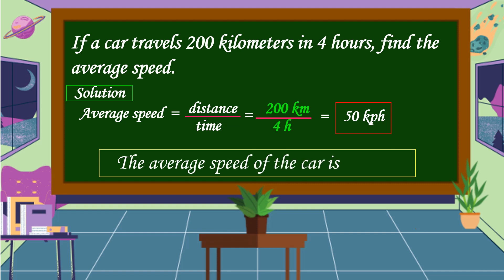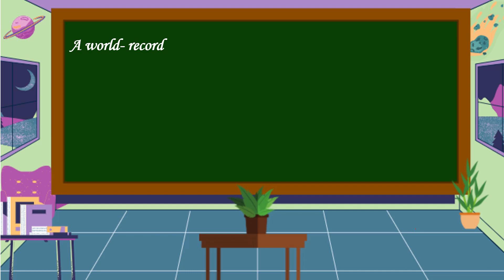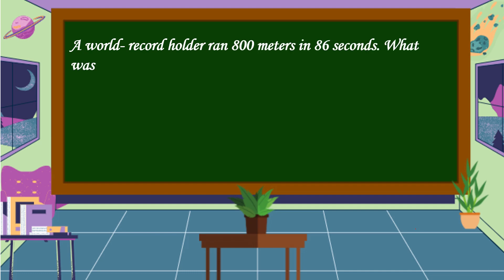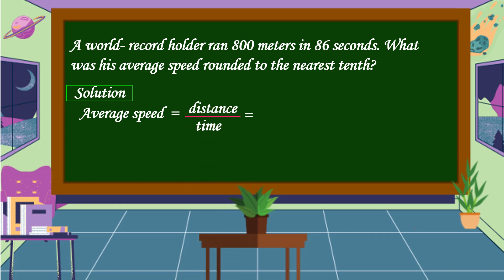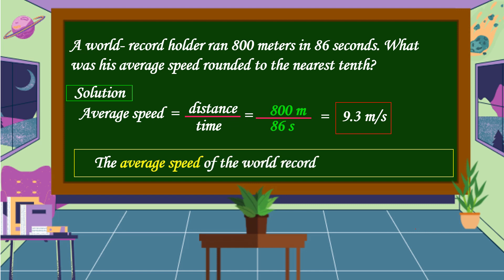Therefore, the average speed of the car is 50 kilometers per hour. Next problem: a world record holder ran 800 meters in 86 seconds. We're going to find the average speed using distance divided by time. The distance is 800 meters and the time is 86 seconds. So, 800 meters divided by 86 seconds equals 9.3 meters per second. Therefore, the average speed of the world record holder was 9.3 meters per second.